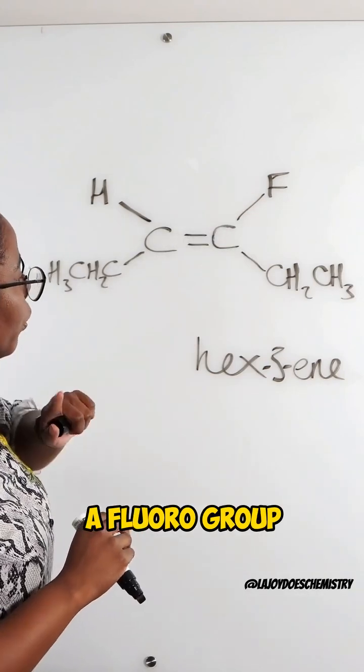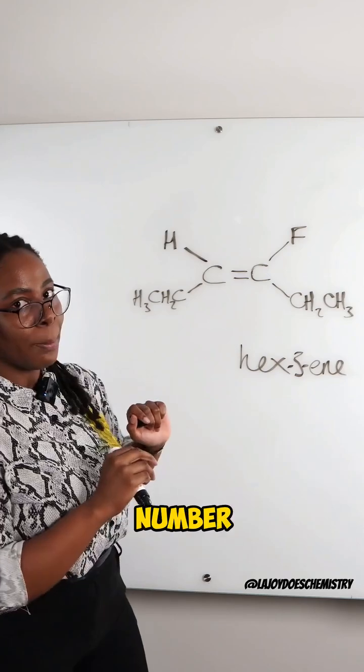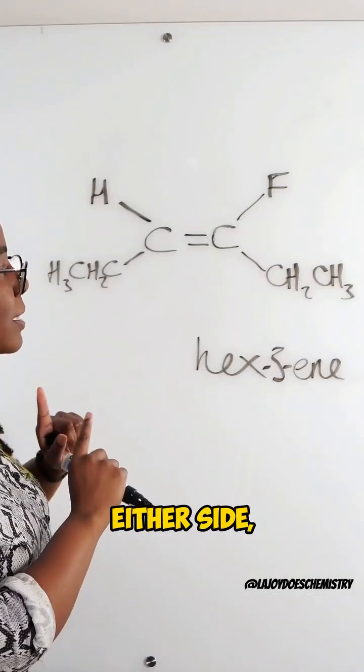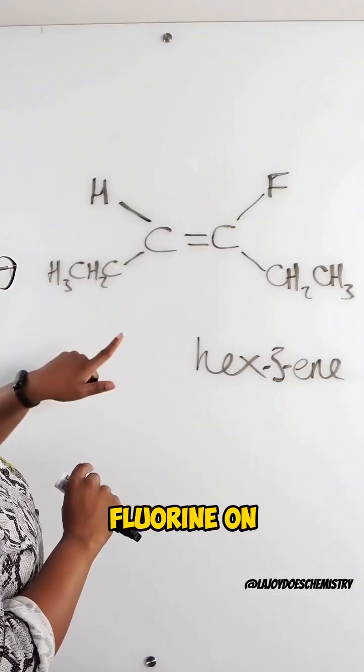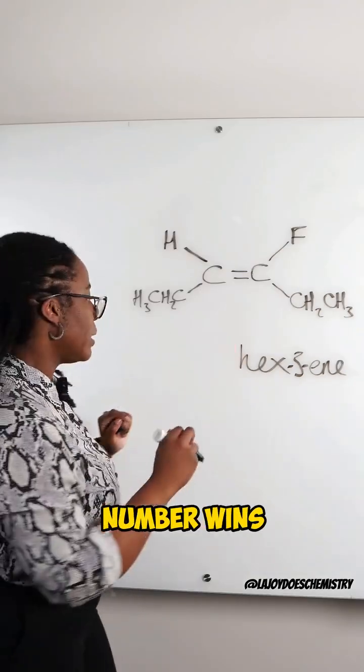We have a fluoro group and numbering that fluorine depends on the smallest possible number. We can number from either side, either putting that fluorine on carbon number one, two, three, four, or one, two, three. Of course, smallest number wins.